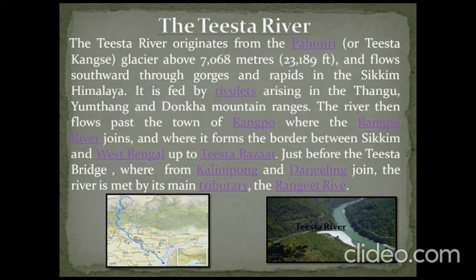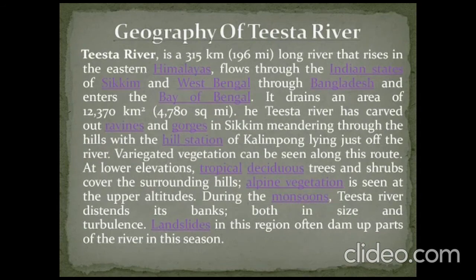Just before Teesta Bazaar, rivers from Kalimpong and Darjeeling join the river, with its main tributary being the Ranjit River. The Teesta River is a 315-kilometer long river that rises in the eastern Himalayas, flows through the Indian states of Sikkim and West Bengal, through Bangladesh, and enters the Bay of Bengal. It drains an area of 12,370 square kilometers. The Teesta River has carved out ravines and gorges in Sikkim, meandering through the hills with the hill station of Darjeeling lying just off the river.